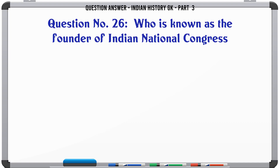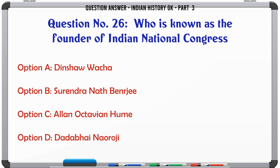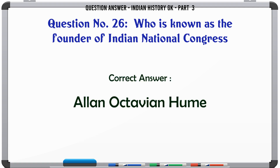Who is known as the founder of the Indian National Congress? A. Din Chowacha, B. Surendranath Banerjee, C. Allan Octavian Hume, D. Dadabhai Naoroji. The correct answer is Allan Octavian Hume.